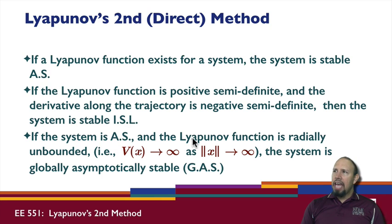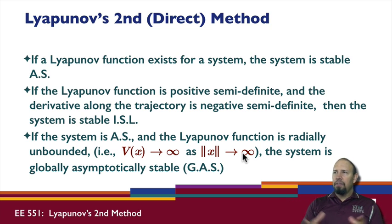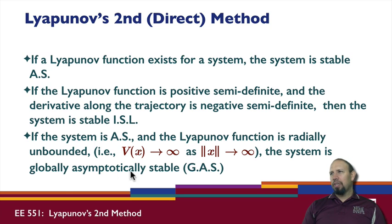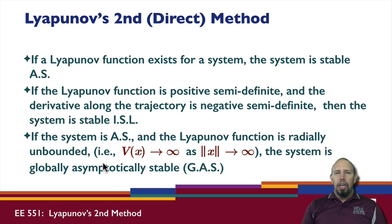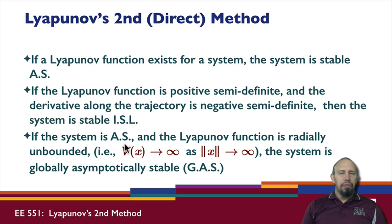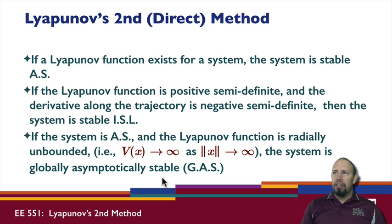If the system is asymptotically stable and the Lyapunov function is radially unbounded — that is, v of x goes to infinity as x goes to infinity — then the system is globally asymptotically stable (GAS). For linear systems, if it's asymptotically stable it's automatically globally asymptotically stable, so this isn't a big deal there. It's only for nonlinear systems that you have to worry about global asymptotic stability, which is why being able to prove it is really helpful for nonlinear systems.